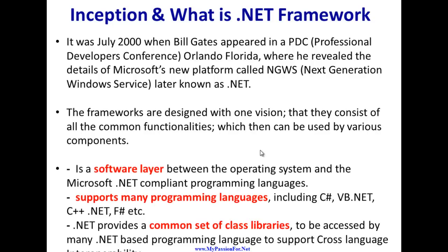A framework is a software layer which sits between your operating system and .NET-compliant programming languages. So Microsoft .NET Framework sits between Visual Studio and the operating system. It supports many programming languages and provides common functionality across different types of applications. Microsoft .NET Framework is a common layer for all .NET programming languages like C#, VB.NET, C++.NET, and even F#, and it provides a common set of class libraries — for example, the System namespace is accessible by all programming languages within .NET Framework.